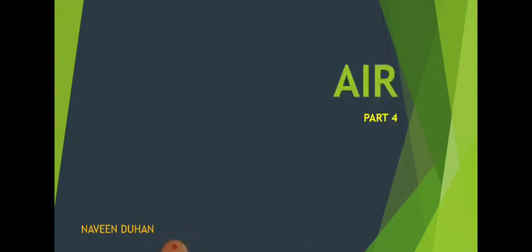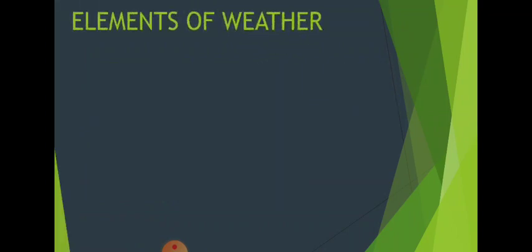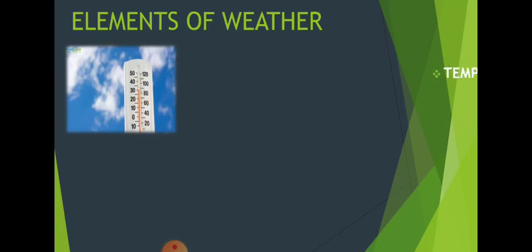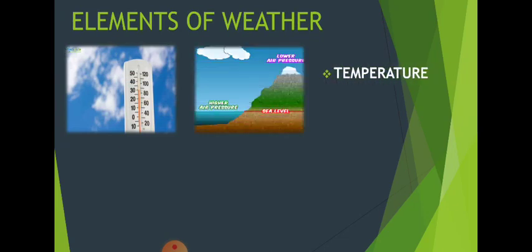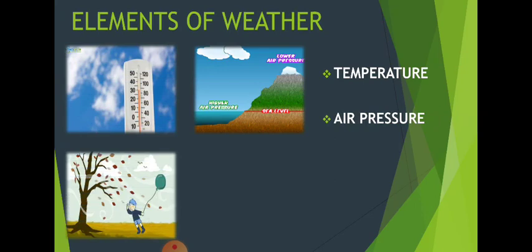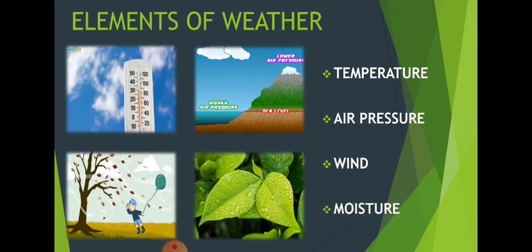We have read about various other things like the factors which affect weather. We have reached our last part of the chapter, that is Moisture. The first part we read was Temperature, the second part was Air Pressure, the third part was Wind, and today we will learn about the fourth part, that is Moisture.